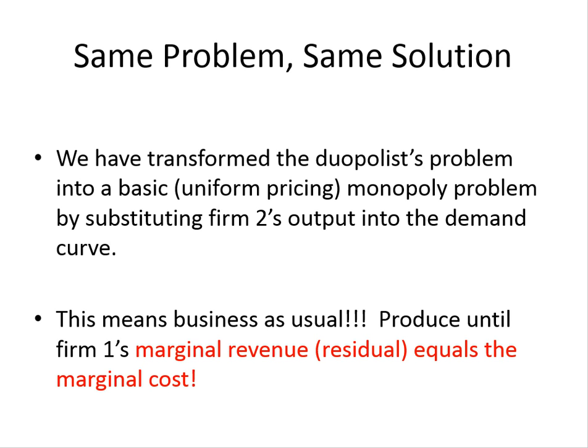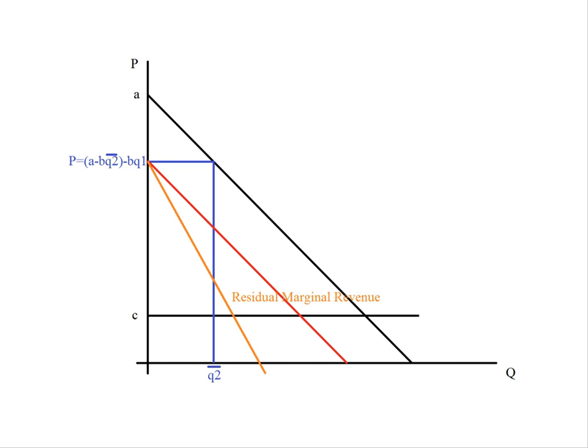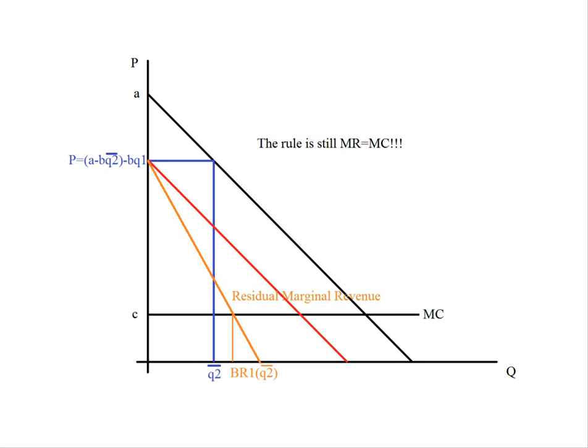Nothing is really different in terms of solving this intermediate step in the oligopoly model. The only thing that's different is that to arrive at this monopoly problem, we substituted the other firm's output into the demand curve, looked at how much demand was left over — that red residual demand line — and computed the marginal revenue curve just like a normal monopoly problem, producing until marginal revenue equals marginal cost. I've labeled that output BR1 because it is the best response of firm one to the output level of firm two — the output level that gives firm one the highest possible profit given Q2-bar.